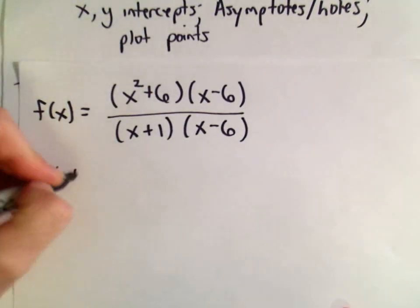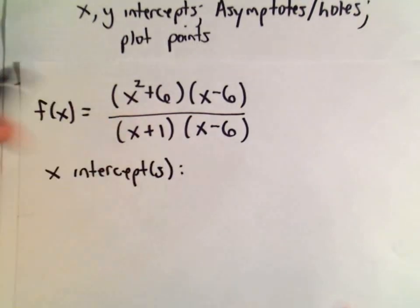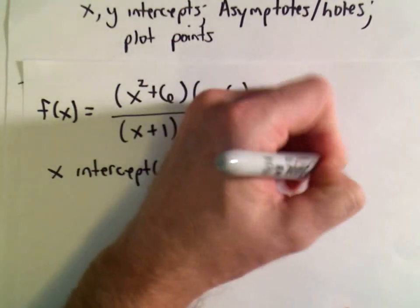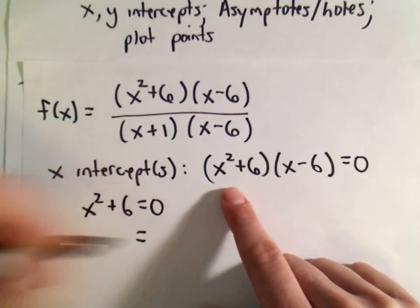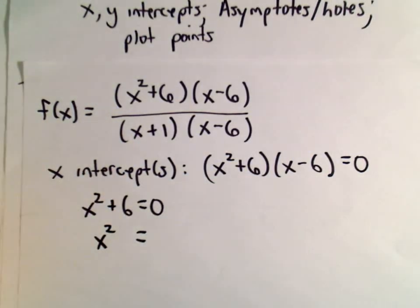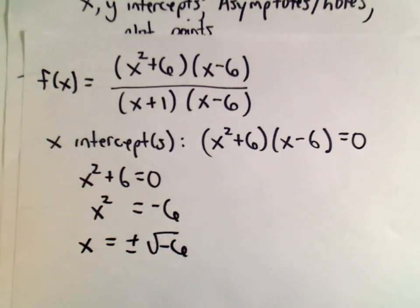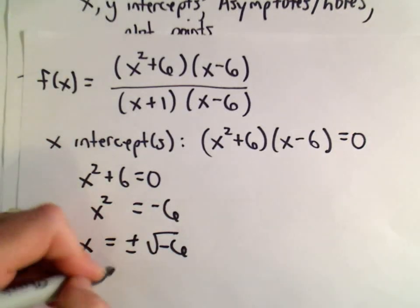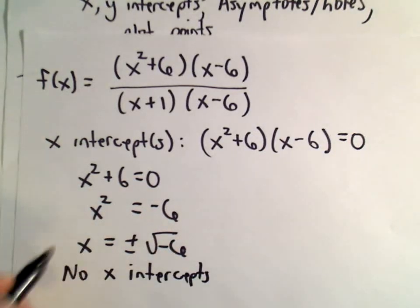Let's think about the x-intercepts. To find them, we take the numerator and set it equal to zero. If we do x squared plus 6 equals 0, we subtract 6 from both sides to get x squared equals negative 6. Taking the square root of a negative number gives us complex or imaginary numbers, which means there are no real solutions and no x-intercepts from this factor.